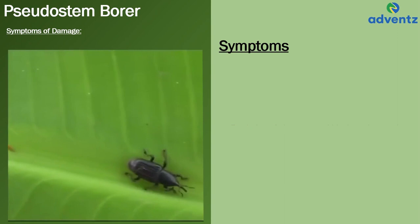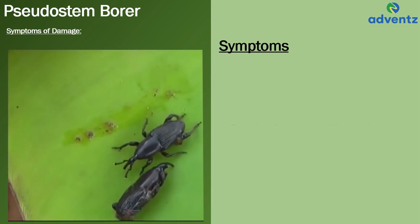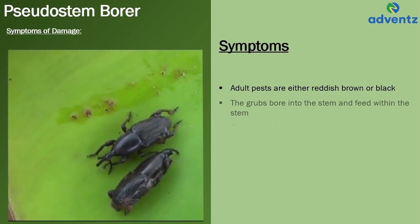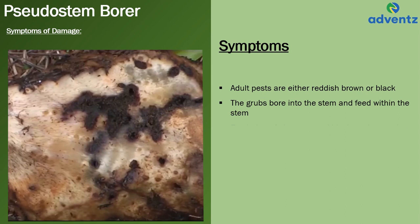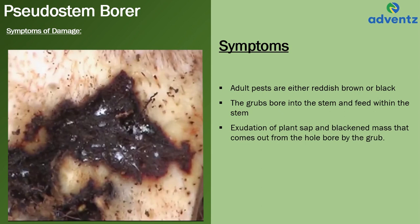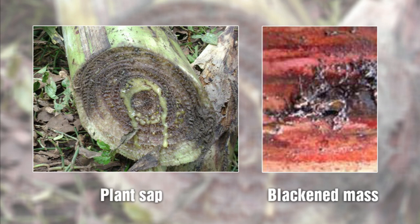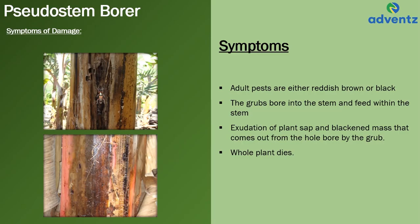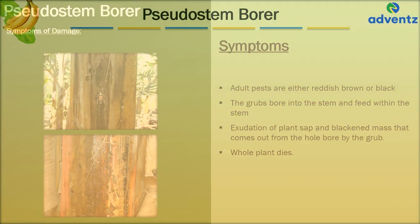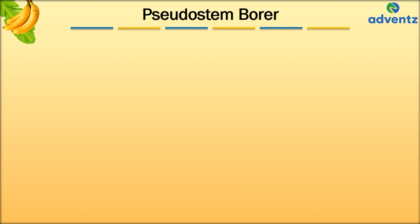The symptoms of Pseudostem Borer are: adults are either reddish brown or black. The grubs bore into the stem and feed within the stem. An initial symptom is exudation of plant sap and a blackened mass that comes out of the hole bored by the grub. Finally, the whole plant dies. The Pseudostem Borer pest is active during monsoon and summer months.